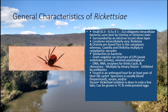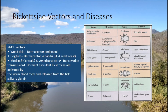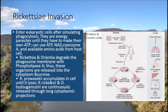Rickettsia species are subdivided into certain groups — fever groups and typhus groups — but we won't cover those in this video. Looking at a slide on Rickettsia vectors and diseases, the tick-borne variation is what we're focusing on here. The reservoir includes ticks and wild rodents, and the organism is Rickettsia. The vectors include wood ticks and dog ticks. Most of this bacteria is found in Mexico and Central and South America.